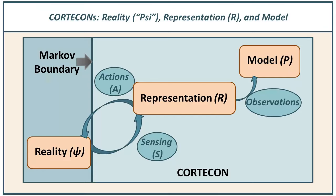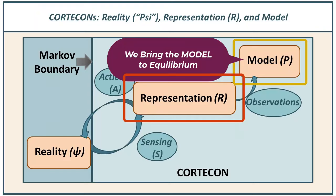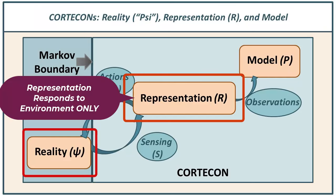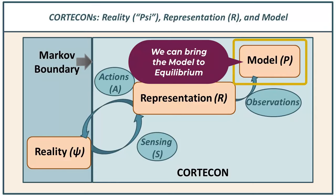Because the external reality is always changing, the representation is changing. In addition to the representation, we have a model of the representation. We want to bring the model to equilibrium — we have no control over bringing the representation to equilibrium, since the representation is responding to its interactions with the environment, and we want it to do that. Instead, we want to modify, adapt, and update the model so that the model itself can come to equilibrium.